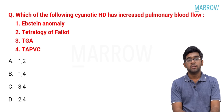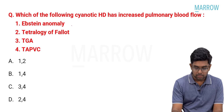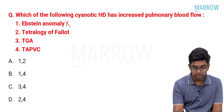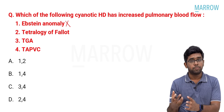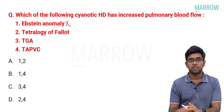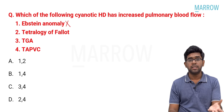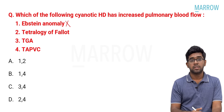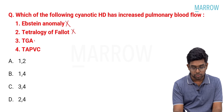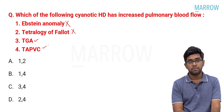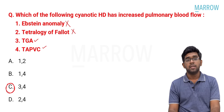Next: which of the following cyanotic heart diseases has increased pulmonary blood flow? Ebstein's anomaly has decreased pulmonary blood flow due to downward displacement of the tricuspid valve. Tetralogy of Fallot classically is associated with sub-pulmonary stenosis and decreased pulmonary blood flow. TGA and TAPVC do have increased pulmonary blood flow — that is the answer. From the options provided, option C — TGA and TAPVC — are associated with increased pulmonary blood flow.